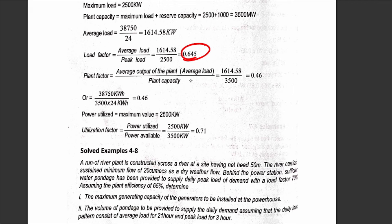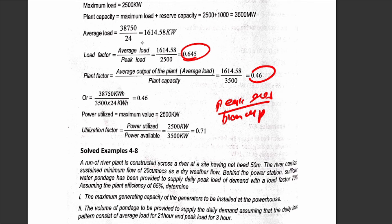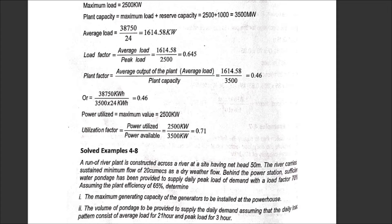The plant capacity factor calculation gives 0.46. Now for the utilization factor: utilization factor equals peak load divided by plant capacity. Coming to peak load over plant capacity, the result comes to 0.171. So the utilization factor is 0.171.